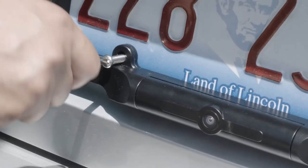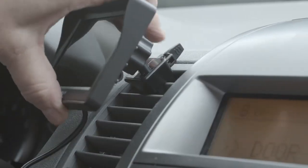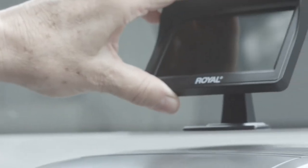The camera easily attaches to your license plate and the 4-inch color monitor can be mounted to a vent, your windshield, or your dashboard.